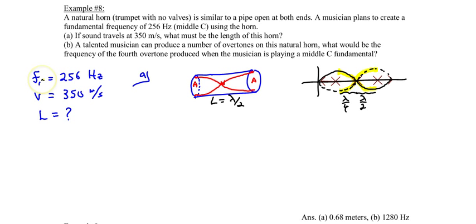So now we know the velocity and the frequency. We can find the wavelength. V equals F times lambda. This is the fundamental and the wavelength that corresponds to that fundamental.